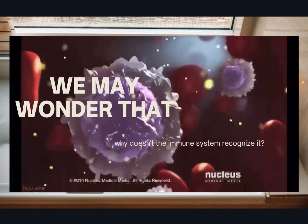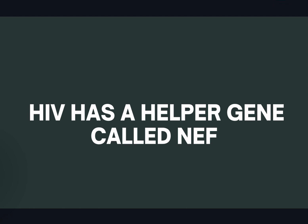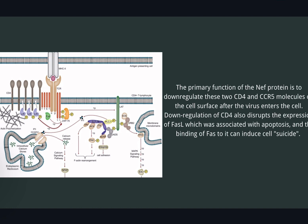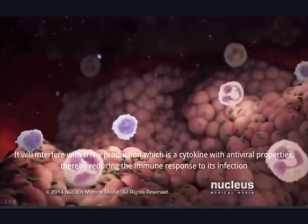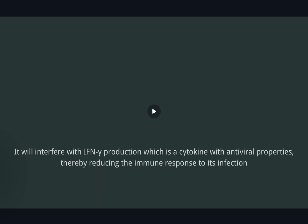Now we may wonder why the immune system doesn't recognize it. Because HIV has a helper gene called NEF. The primary function of the NEF protein is to down-regulate CD4 and CCR5 molecules on the cell surface after the virus enters the cell. Down-regulation of CD4 also disrupts the expression of FAS-L, which is associated with apoptosis — binding of FAS to it can induce cell suicide. NEF also interferes with interferon production, a cytokine with antiviral properties, thereby reducing the immune response to infection.